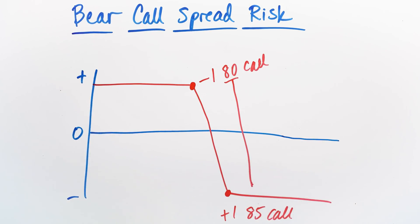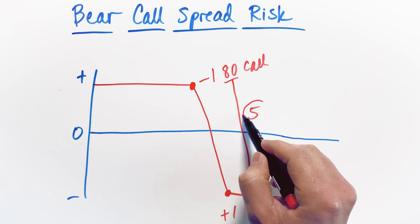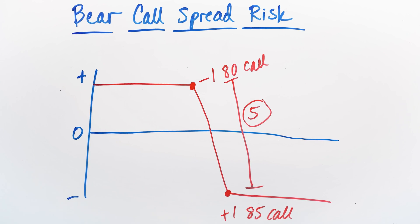Which means that our spread width here is just $5 on this position, not $8, $5. So it's just $5 on this position. That's the width of the spread. That is the basis that we are going to use for the purposes of calculating risk.